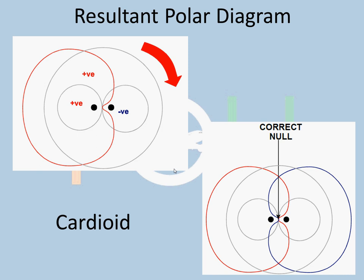The cardioid has a single null, as you can see. However, the cardioid alone would not be able to provide an accurate bearing. To improve accuracy — because ICAO demands an accuracy of plus or minus five degrees to the station — the cardioid polar diagram is rotated by rotating the loop aerial clockwise. This produces an increase in signal strength and gives a right-hand cardioid as well, which improves the strength of the null and gives a much more accurate bearing.